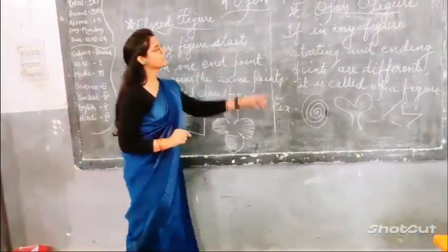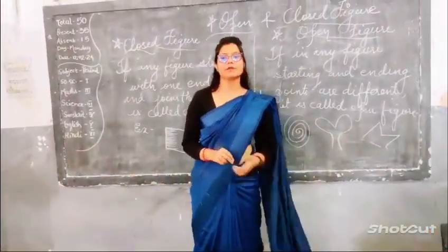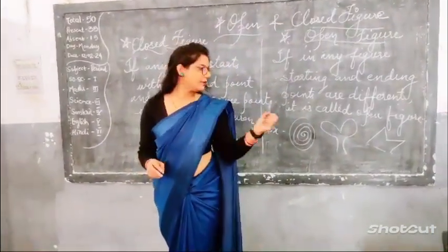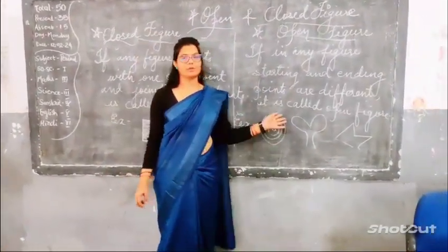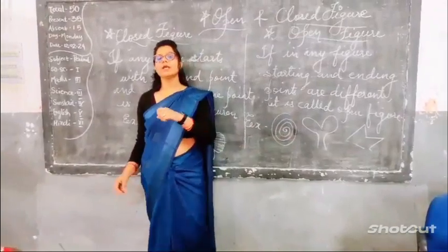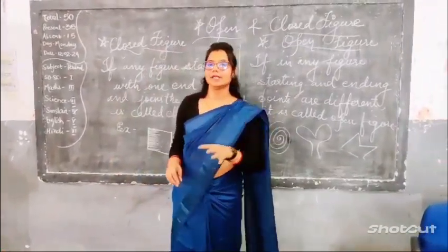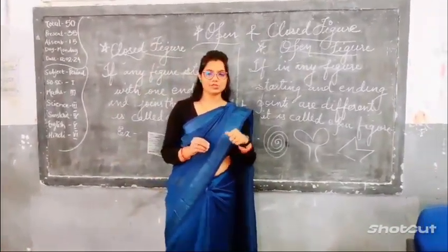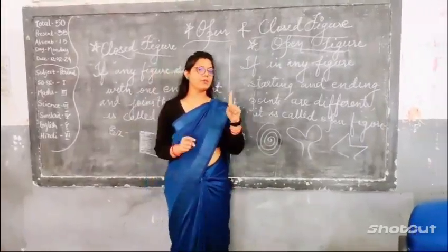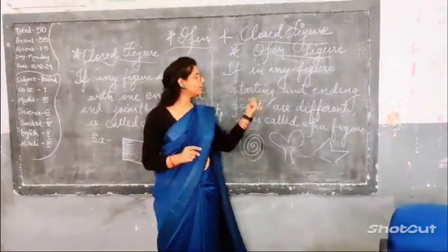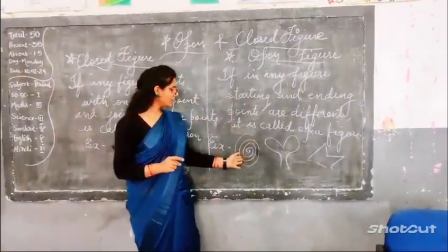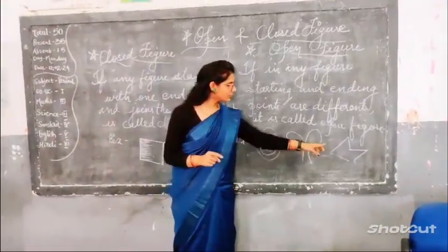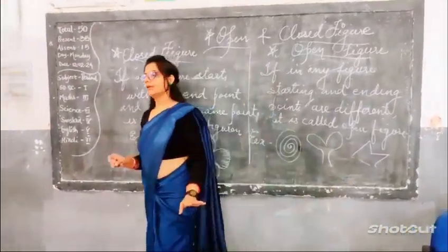Next is the open figure. In this figure, if there is any gap between any part of the figure, then it is called an open figure, or the starting point and ending point do not match — they are not joined at the same point — therefore it makes an open figure. For example, this figure is in open form, and this one also.